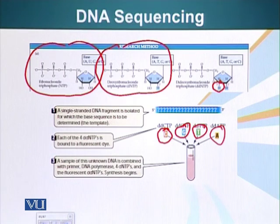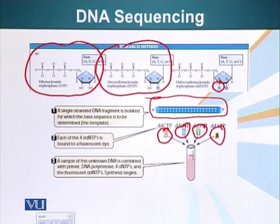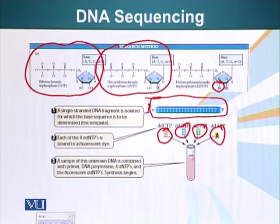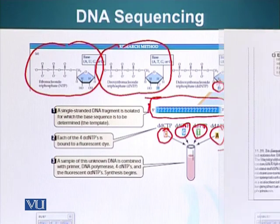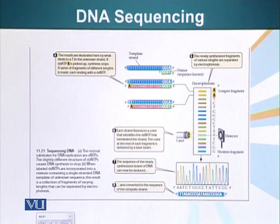So we run our PCR reaction. We have the template DNA — we want to know what is the sequence of this DNA strand. We have a primer; we have a little bit of information about this DNA fragment, so we can design the primer. The rest of the sequence we need to determine. We add the normal components for PCR reaction — the normal nucleotides and the enzymes — and additionally we add these special di-deoxyribonucleosides in a very, very small quantity compared to the normal nucleotides.